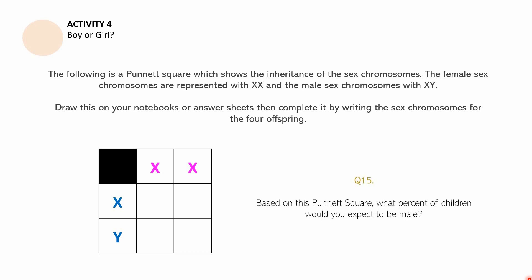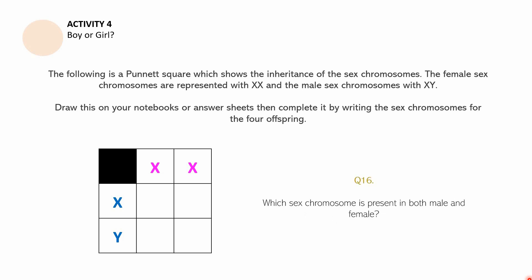Question number 15: Based on this Punnett square, what percent of children would you expect to be male? Question number 16: Which sex chromosome is present in both male and female? Question number 17: Infer which sex chromosome determines a person's sex. You may pause the video if you need more time.